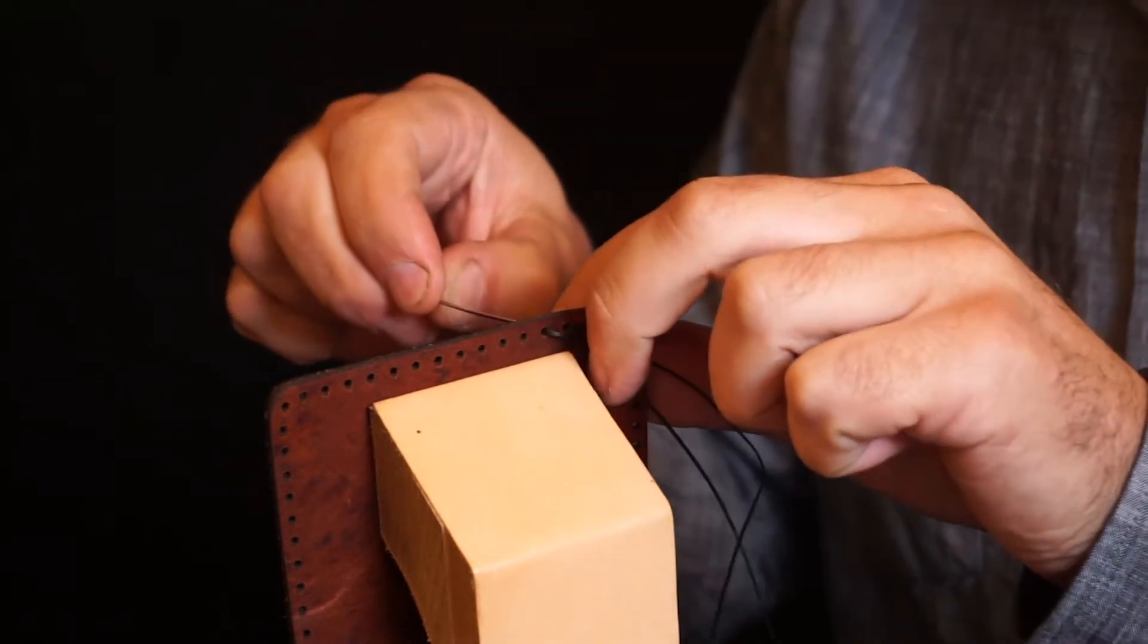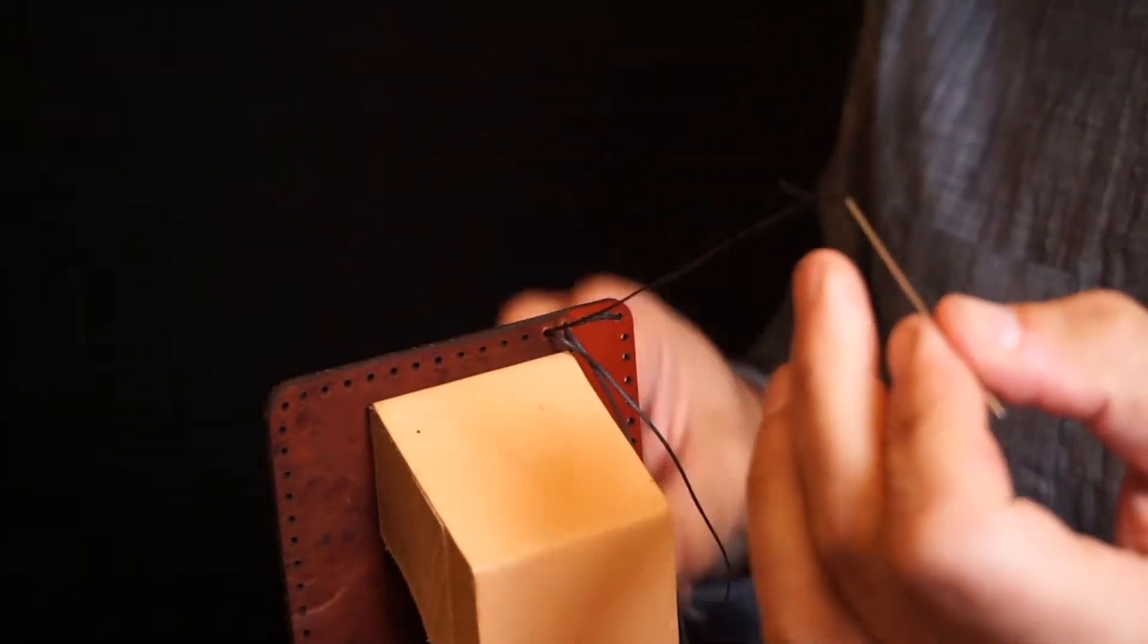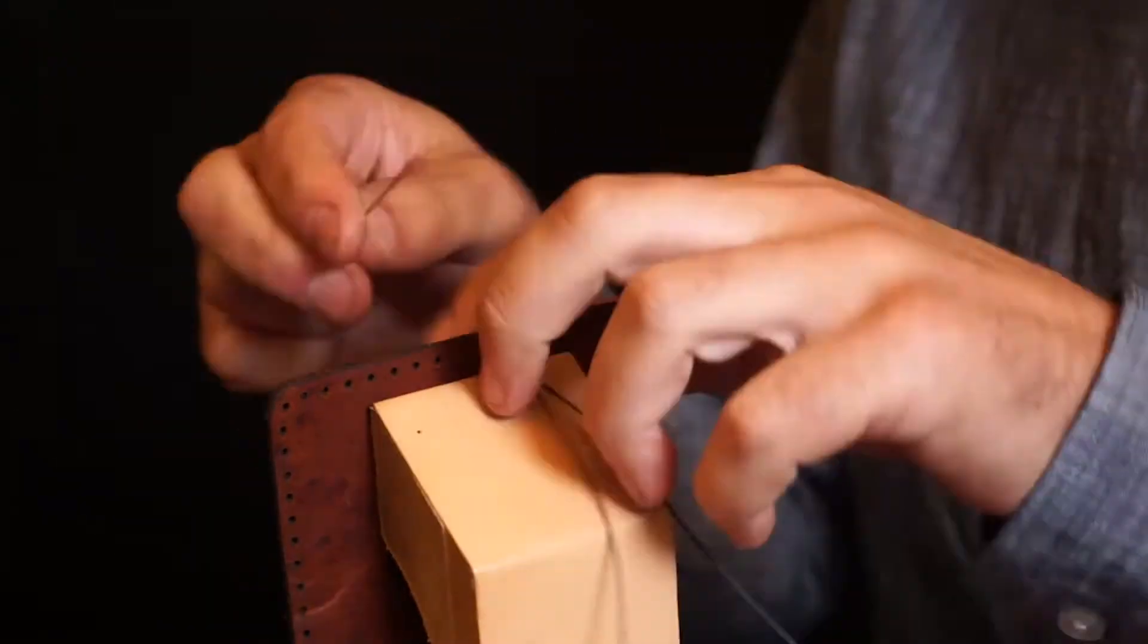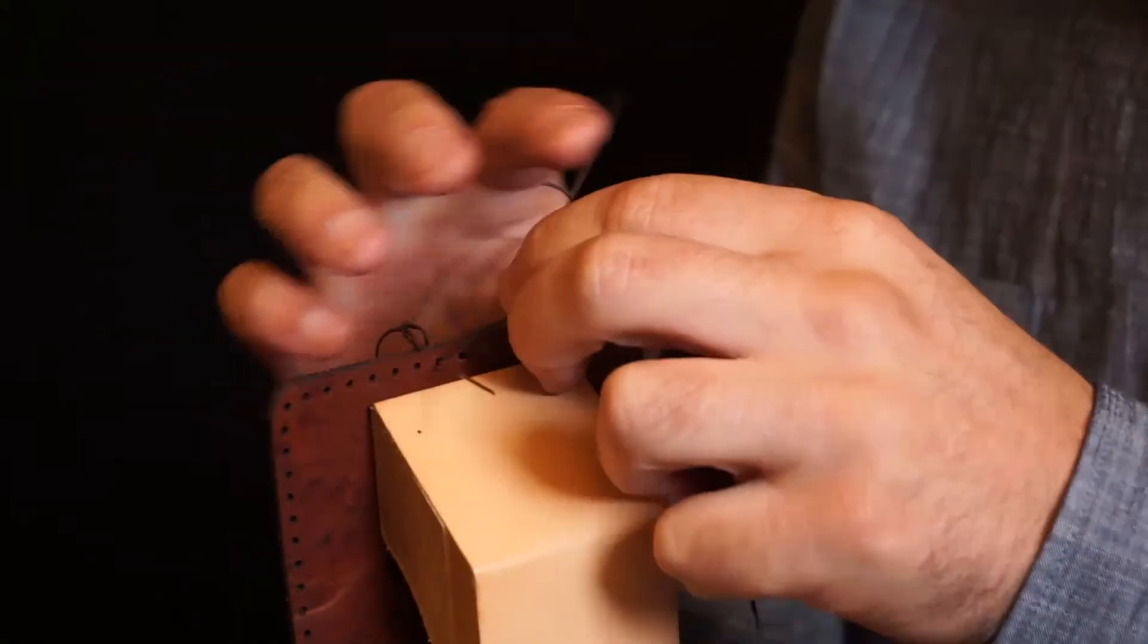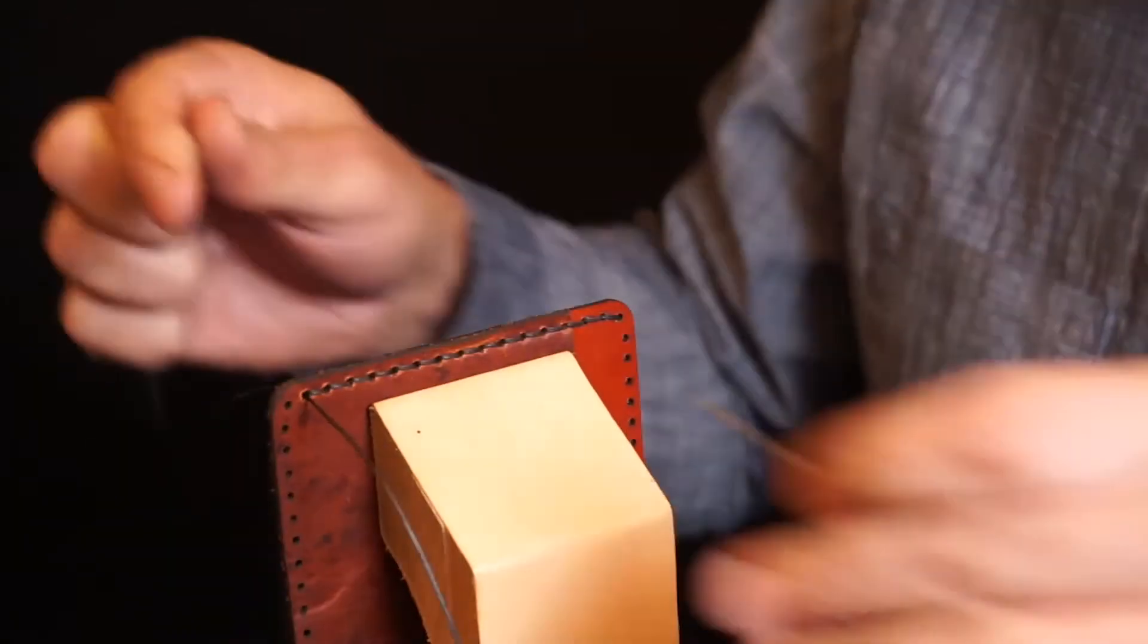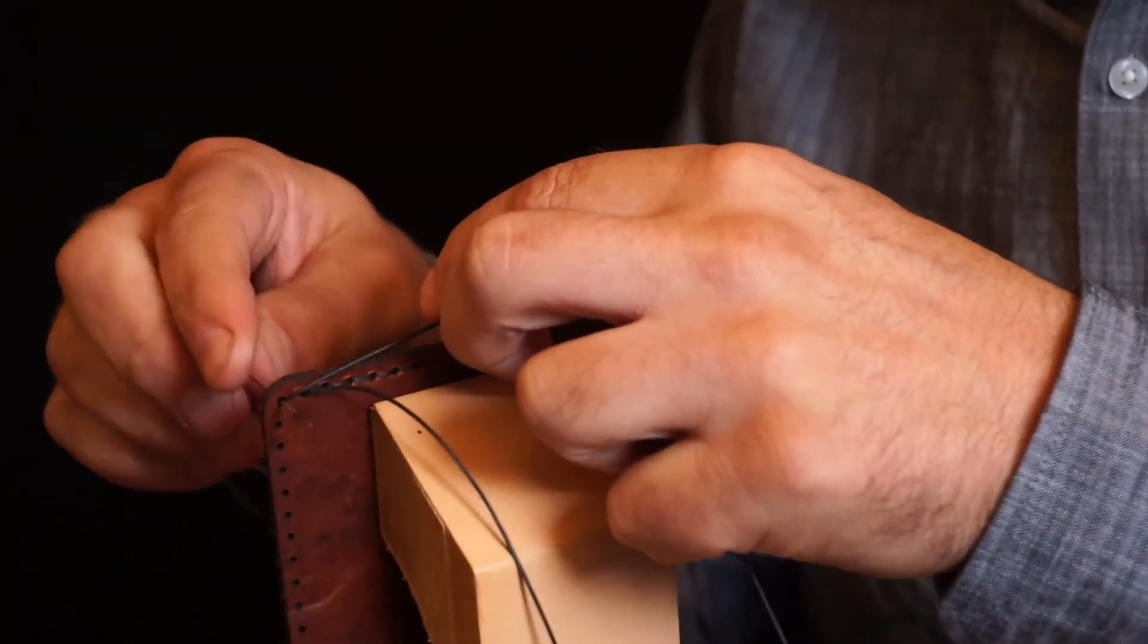Now we're going to continue saddle stitching all the way down to the next corner hole where we'll add in the second piece.